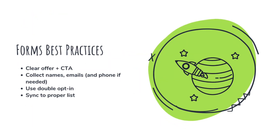If you're collecting phone numbers for SMS, make sure you're compliant with regulations like TCPA and GDPR. That means including consent language and an opt-in checkbox. Finally, you can assign form submissions to a specific list, like newsletter subscribers or SMS list, so you know exactly who's who.